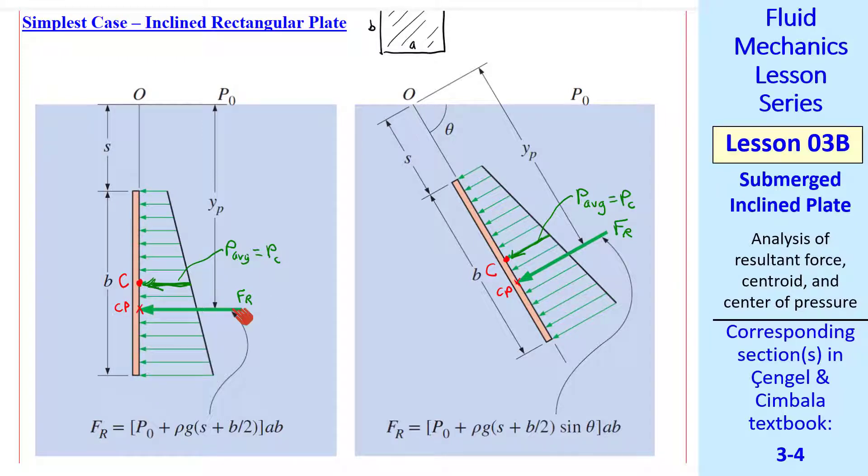Notice that for a plate, the resultant force is always perpendicular. Whether the plate is vertical or inclined, FR is perpendicular to the plate and acts at the center of pressure. For either case, FR equals P average times A, the area of the plate. In both cases, the liquid is exposed to atmospheric pressure at the top.